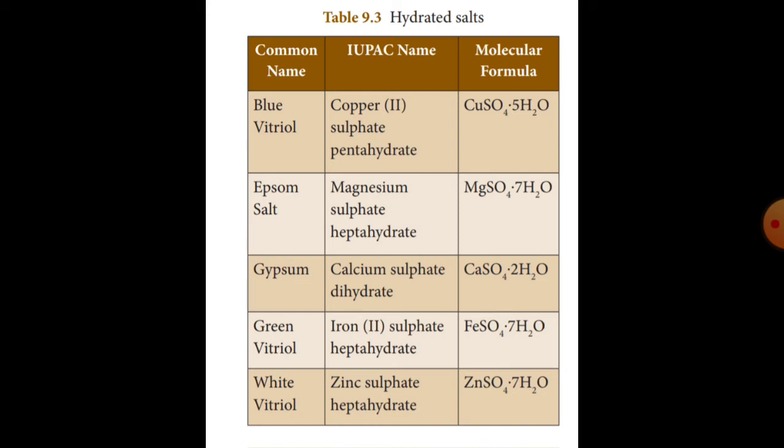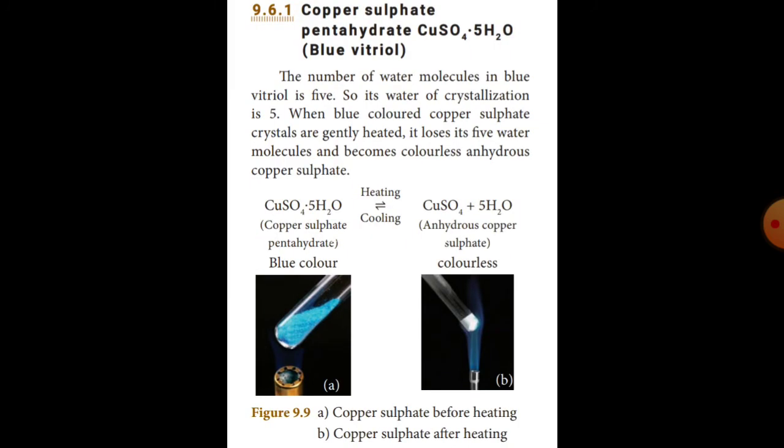Iron(II) sulfate heptahydrate: FeSO₄·7H₂O. Then white: zinc sulfate heptahydrate — ZnSO₄·7H₂O. These are examples of hydrated salts. Copper sulfate pentahydrate has 5 water molecules as water of crystallization.